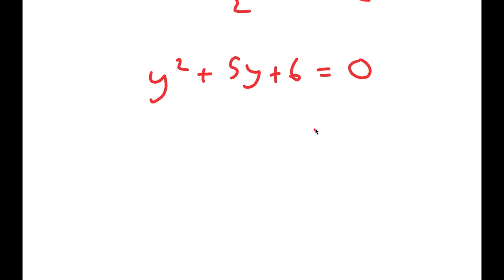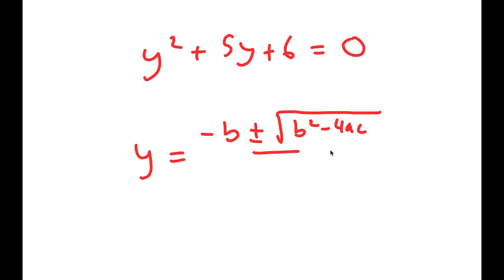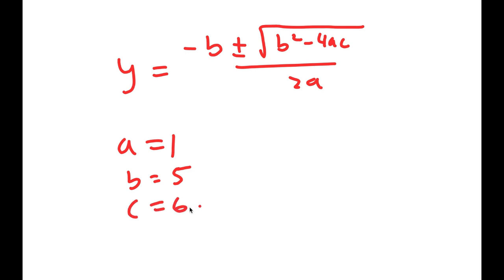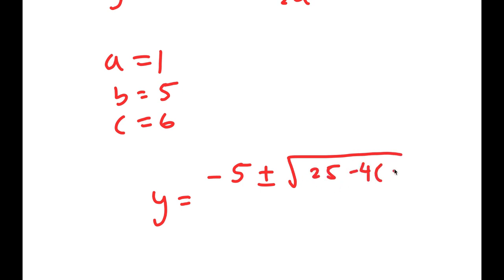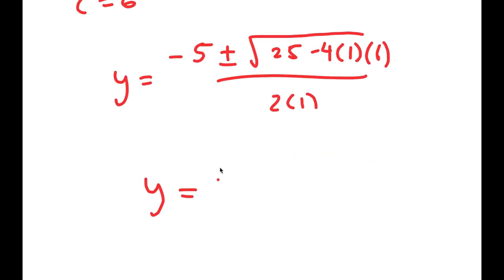From here I can use the quadratic formula: negative b plus or minus the square root of b squared minus 4ac, all over 2a. In this case a is 1, b is 5, and c is 6. So I get y equals negative 5 plus or minus the square root of 5 squared, which is 25, minus 4 times 1 times 6, all over 2 times 1.